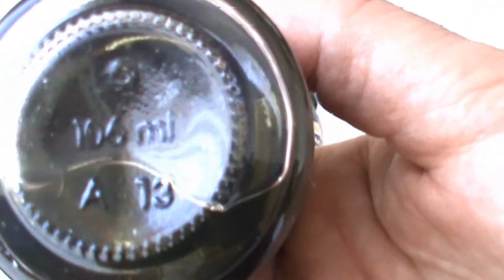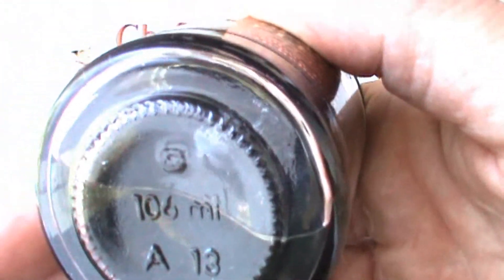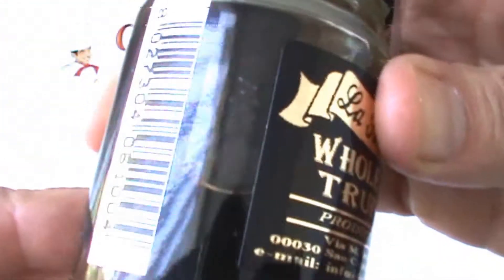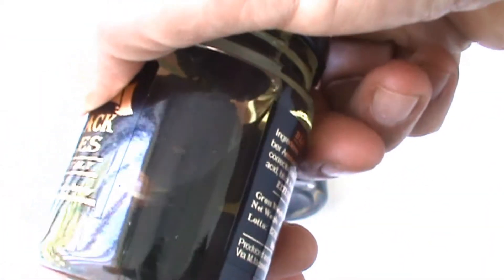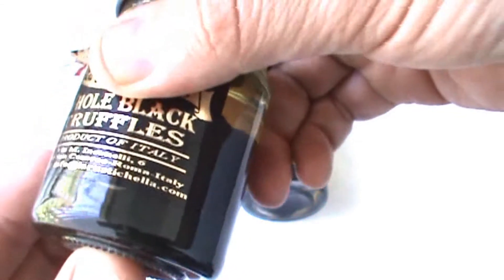You can see them right through the jar. There's one, two, maybe three in this one. They're pretty good size and they're sold by weight.